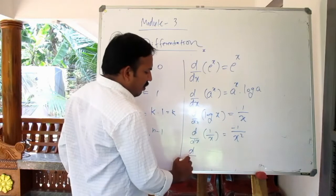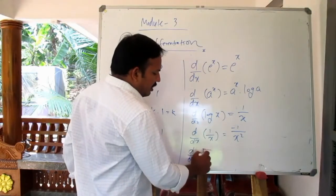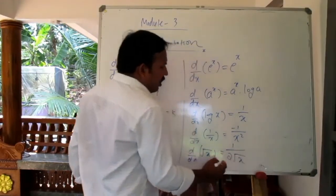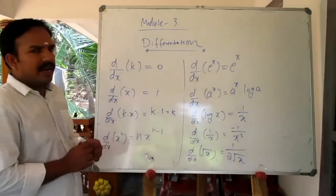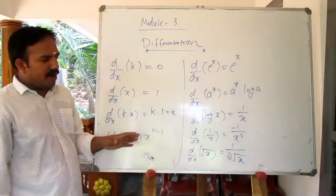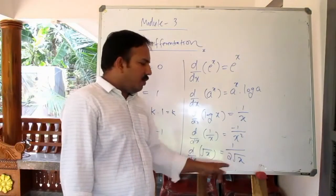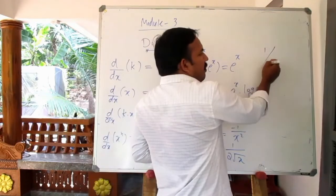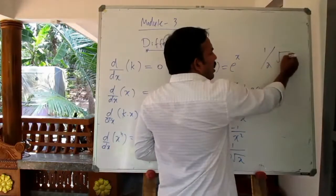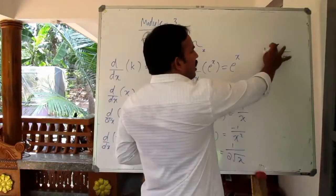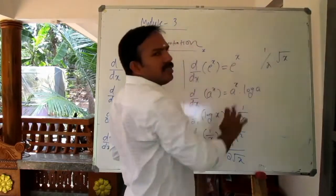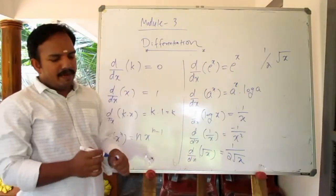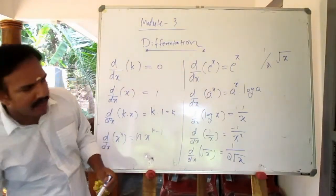d by dx of root x equals 1 by 2 root x. The derivative of root x is 1 by 2 root x. We can write this as 1 divided by 2 root x.